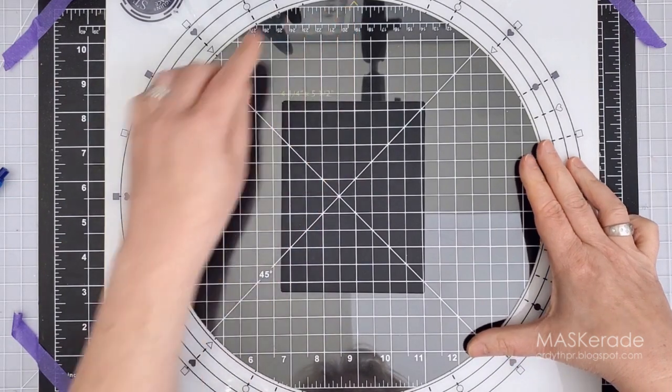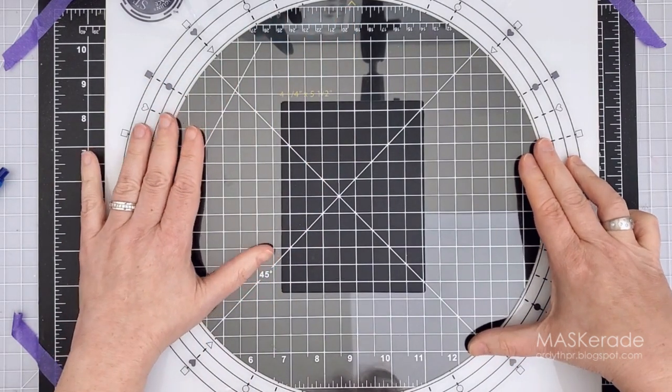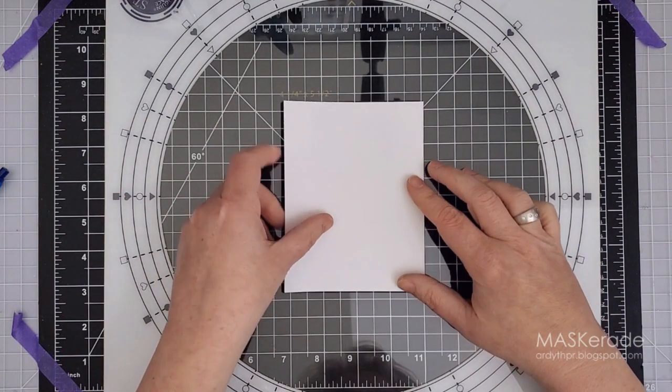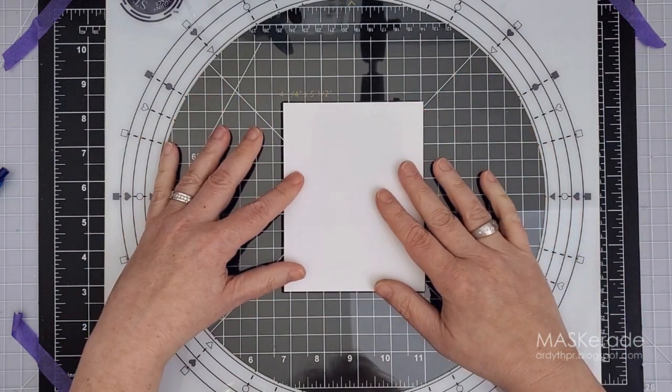Here's the four and a quarter by five and a half inch template. Each template has an arrow at the top. When it's lined up at the top mark on the circle guide, your paper is straight and centered.